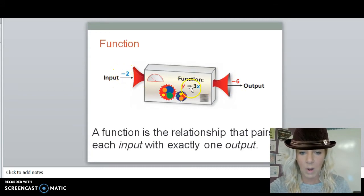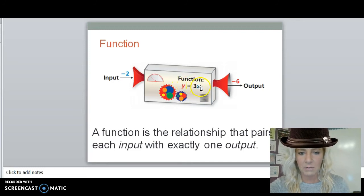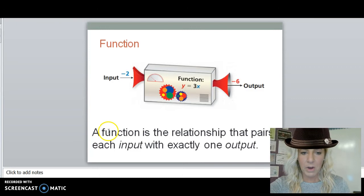And the function machine has some sort of equation, and then you get an output. So for example, if my function is y equals 3x, if my input is negative 2, I'm going to put negative 2 into the function, y equals 3x. X is represented by your input, so negative 2 times 3 is negative 6, which is my output. So think of a vending machine. If I were to put negative 2 into the vending machine, and inside the vending machine this was the equation, it's going to take negative 2 times 3 to get an output of negative 6. So a function is the relationship that pairs each input with exactly one output.